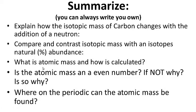Summary questions: explain how the isotopic mass of carbon changes with the addition of a neutron. Compare and contrast isotopic mass with an isotope's natural abundance. What is atomic mass and how is it calculated — explain in your own words. Is the atomic mass of an element an even number? If not, why? If so, why? And where on the periodic table can the atomic mass be found? Go ahead and pause while you do your summary, and we'll see you next time.